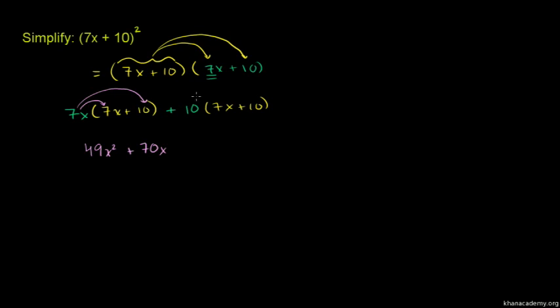7x times 10 is 70x. And 10 times 7x is also 70x. Together, these middle terms give us 140x.